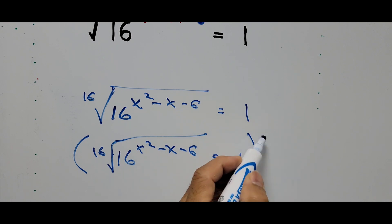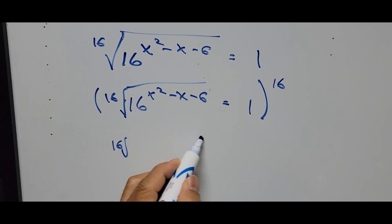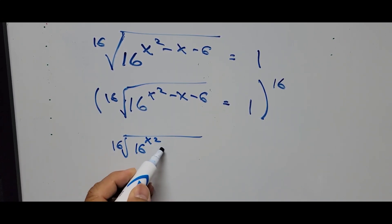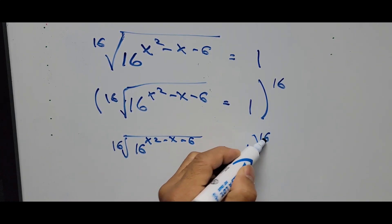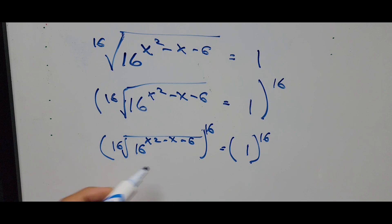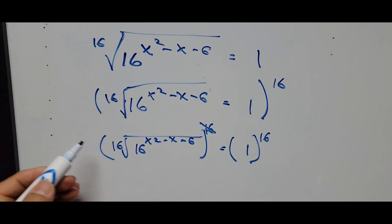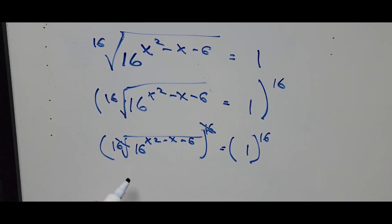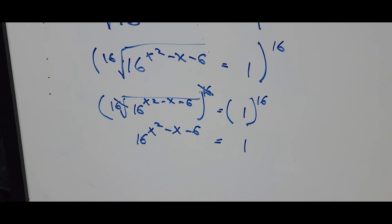Raising to the power of 16, the 16th root of 16 to the power x squared minus x minus 6 equals 1. The 16th power and the 16th root cancel, so this turns out to be just 16 to the power x squared minus x minus 6. One to the 16th power is still 1.